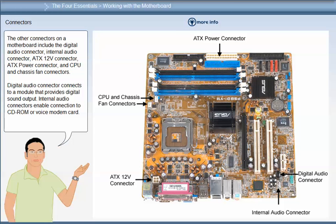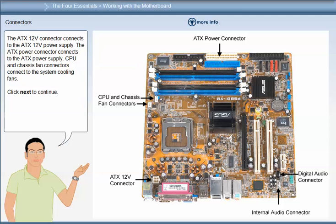The other connectors on the motherboard include the digital audio connector, internal audio connector, ATX 12V connector, ATX power connector, and CPU and chassis fan connectors. The digital audio connector connects to a module that provides digital sound output. Internal audio connectors enable connection to CD-ROM or voice modem card. The ATX 12V connector connects to the ATX 12V power supply. The ATX power connector connects to the ATX power supply. CPU and chassis fan connectors connect to the system cooling fans.